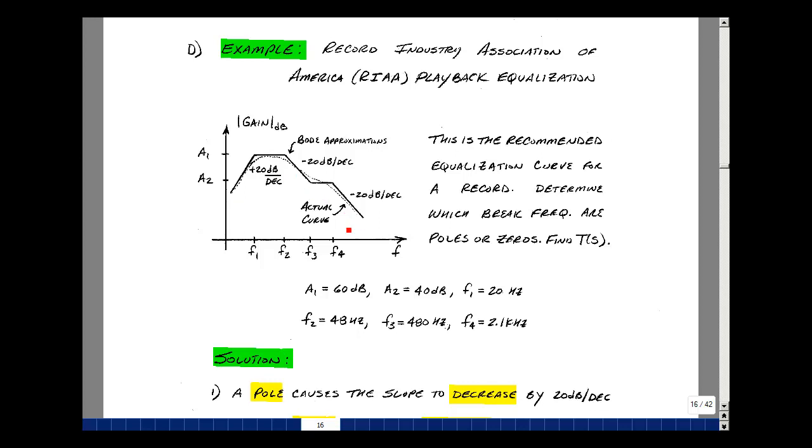The dotted line is the recommended equalization curve by the Record Industry Association of America, or RIAA. On top of this curve, I made some sketches of the slopes as multiples of 20 dB per decade. Could you figure out the break frequencies and whether it's a pole or a zero, and use that to get the transfer function for the gain of the equalization circuit?